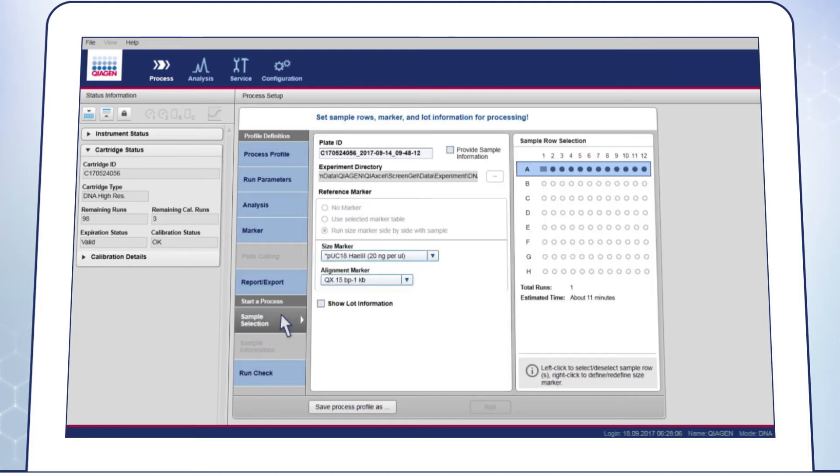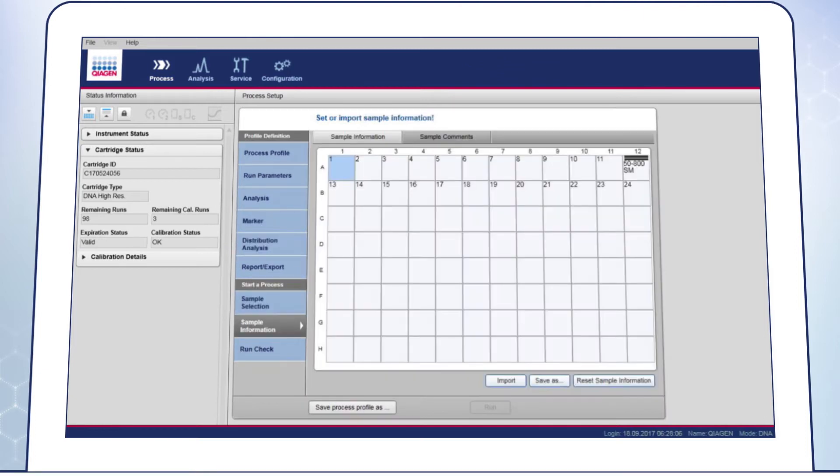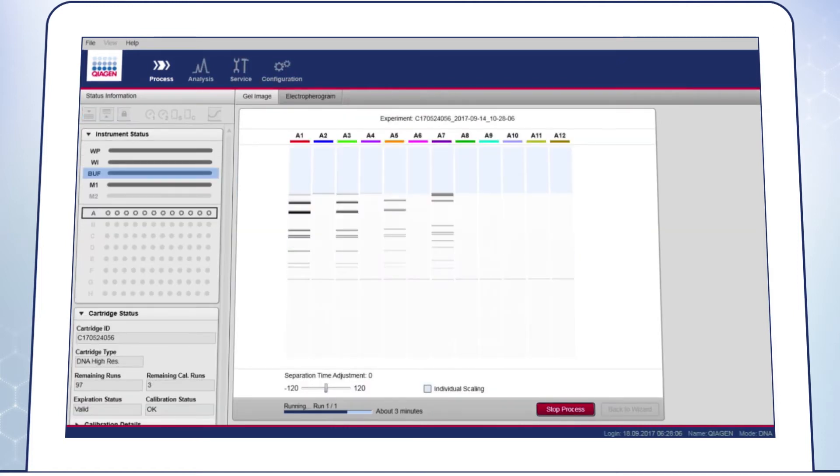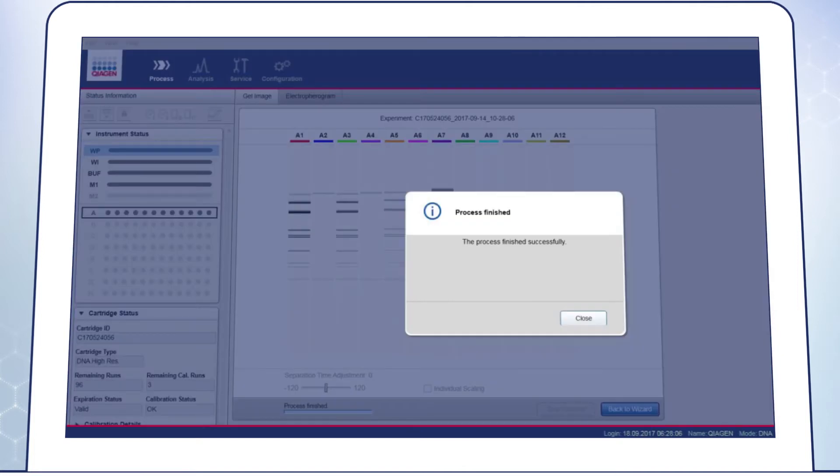On the Sample Selection screen, define the plate ID which is also the later run file name. On the Sample Information screen, you can define sample names or import sample ID information. On the Run Check screen, you can get an overview of your settings, start the run and check for any errors and warnings. If everything is fine, you can start the run. If changes are made in the parameters, the new profile can be saved.